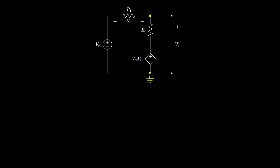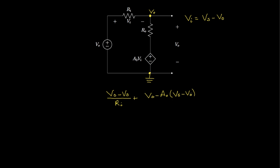I'll define the output node as V0 relative to ground, and note that Vi is VS minus V0. I can then write a node voltage equation for this node. The current flowing in one direction is V0 minus VS over Ri, and the current flowing in the other direction is V0 minus A0 times Vi, all over R0, where Vi equals VS minus V0. The sum of these currents must equal zero.